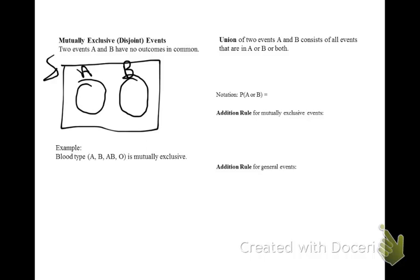For example, if you're blood type A, then it's impossible for you to have blood type B, AB, or O. Each one is distinct and separate from the other.